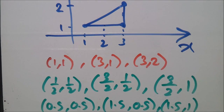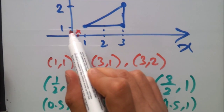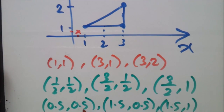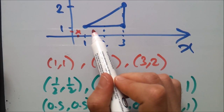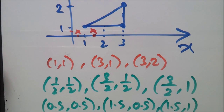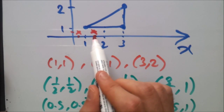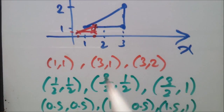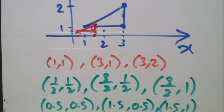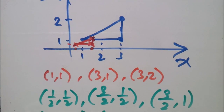Plotting everything in: (0.5, 0.5) is around here; (1.5, 0.5) is about here; and (1.5, 1) is here. So the new smaller triangle looks something like that. Fairly straightforward — it can be a bit tricky but certainly doable. Now let's move on to the final example.